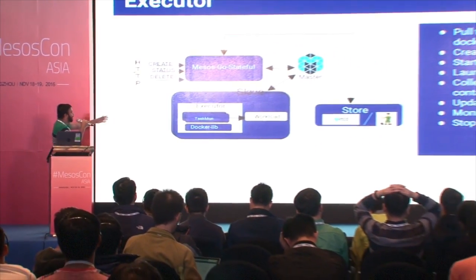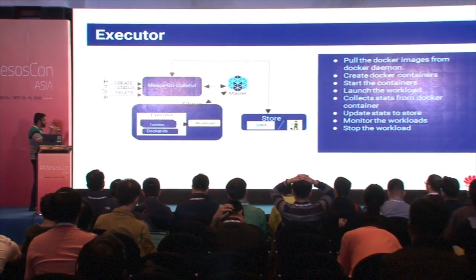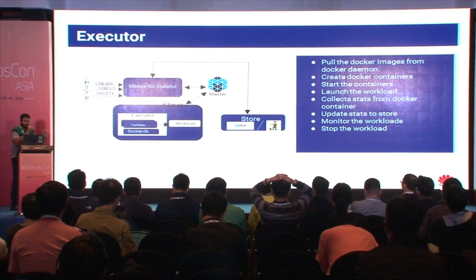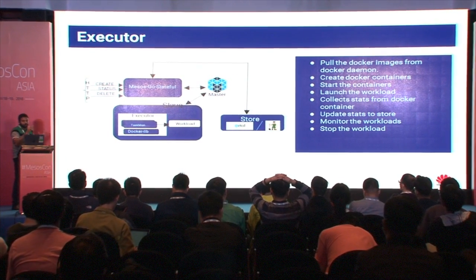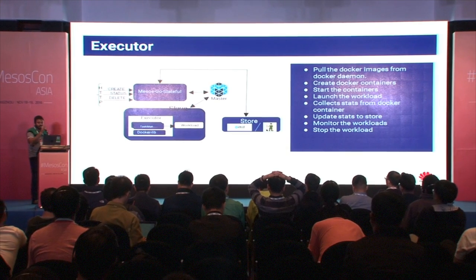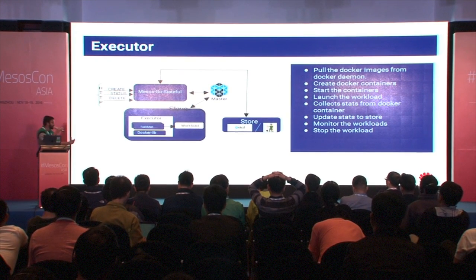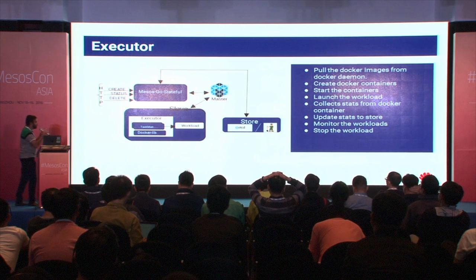In the custom executor design, it doesn't write to the store directly — it goes via the abstraction. For example, the custom executor can collect statistics about a running Docker container and send it as a framework message, which is automatically updated to the store. We are generalizing how you monitor a task from the custom executor — how you start and monitor a task. The Docker lib is one of the two main components of the custom executor.